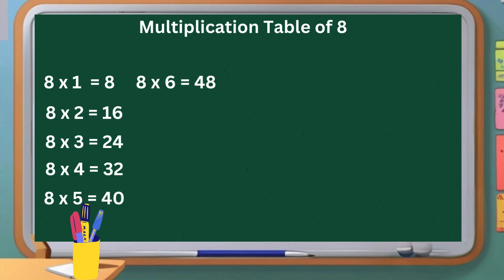Eight sixes are forty-eight. Eight sevens are fifty-six. Eight eights are sixty-four. Eight nines are seventy-two. Eight tens are eighty.